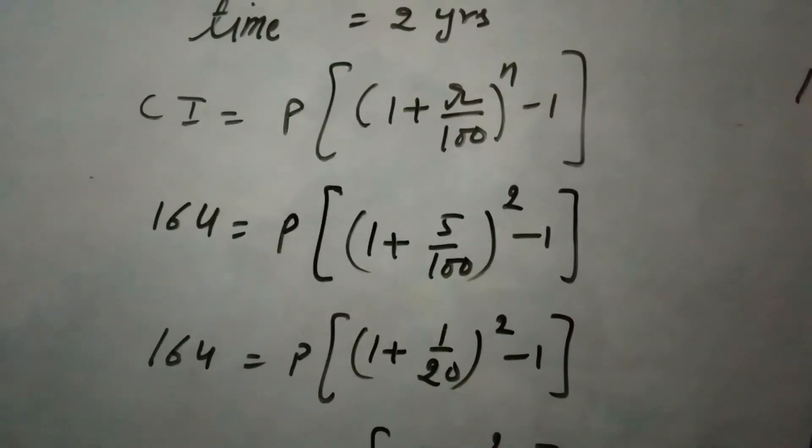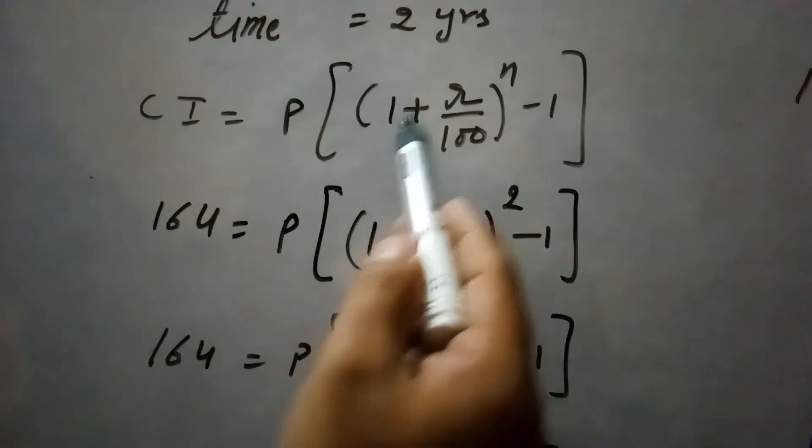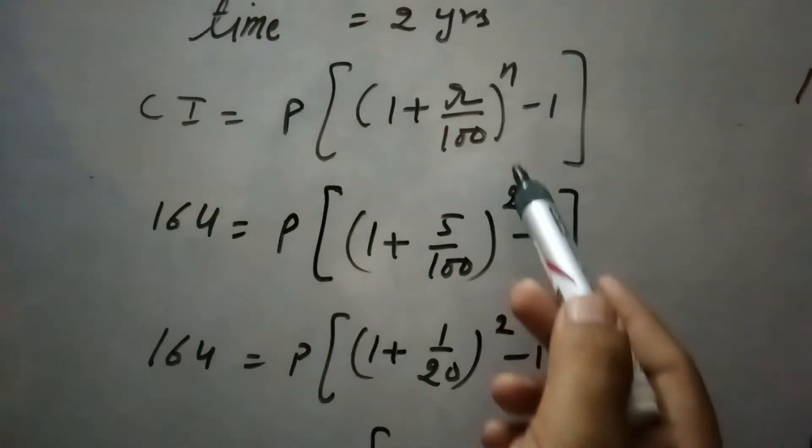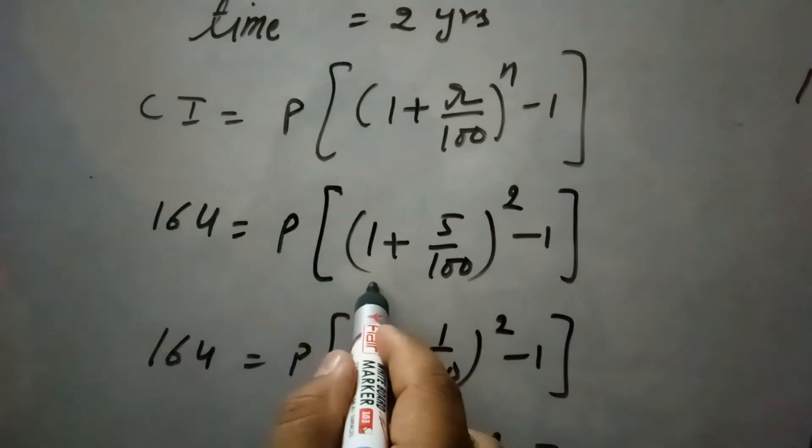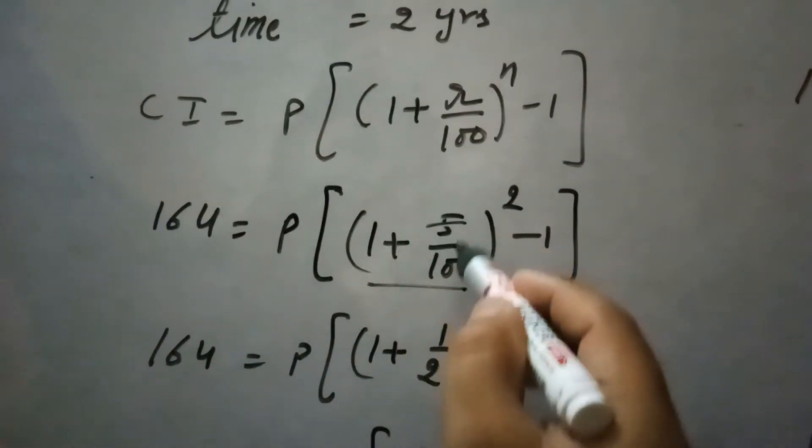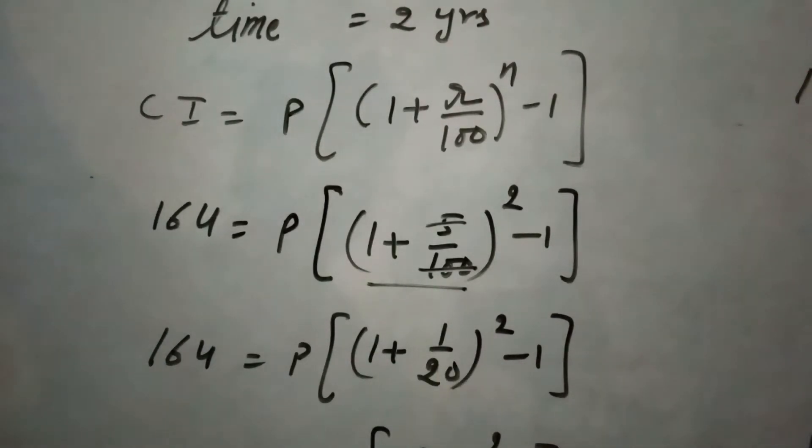So now substituting the values here in this formula, compound interest is 164, rate of interest is 5% and time is 2 years. So now this side calculating here, 5 divided by 100 is 1/20, so it becomes 1 plus 1 upon 20 raised to power 2 minus 1. So we will take LCM first inside the bracket and then we expand this.